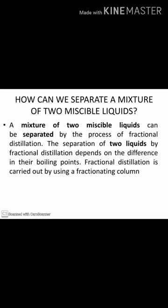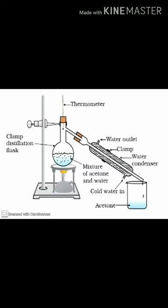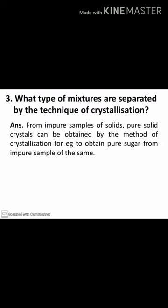Miscible liquids can be separated by fractional distillation. The separation depends on the differences in boiling points. A fractionating column is used. Liquids whose boiling point difference is less than 25 K can be separated by this method. For example, gases from air can be separated this way. The apparatus is similar to simple distillation except that a fractionating column is fitted between the distillation flask and the condenser.